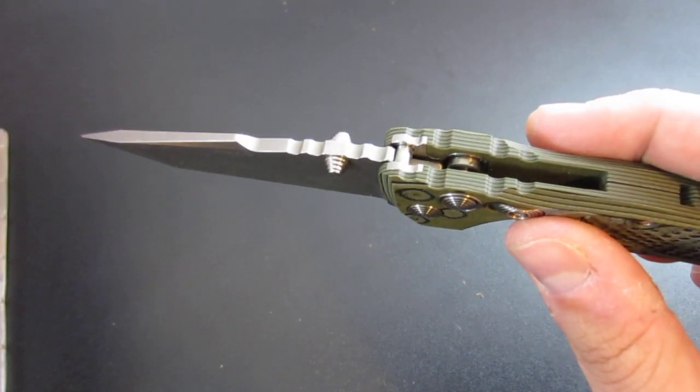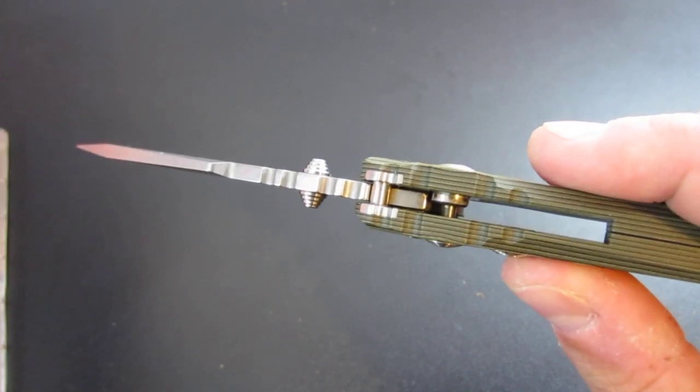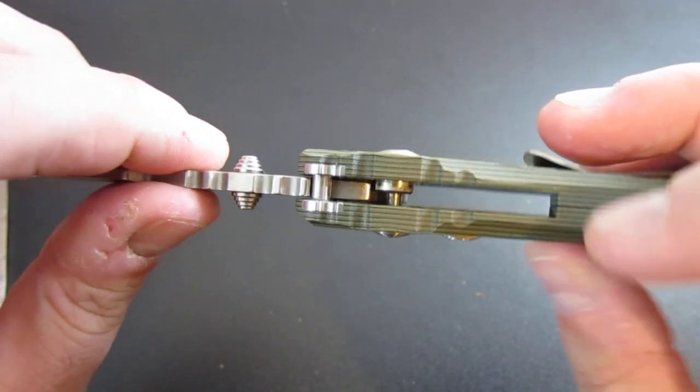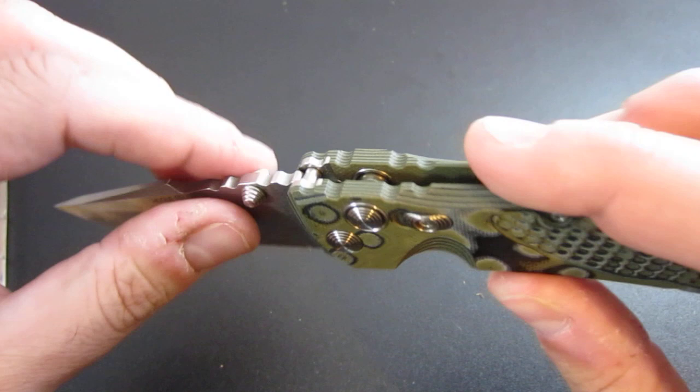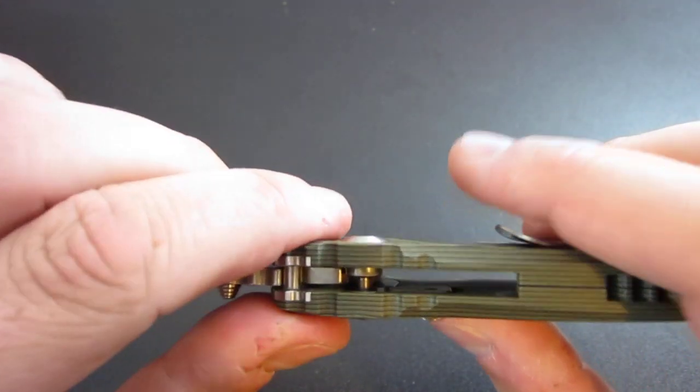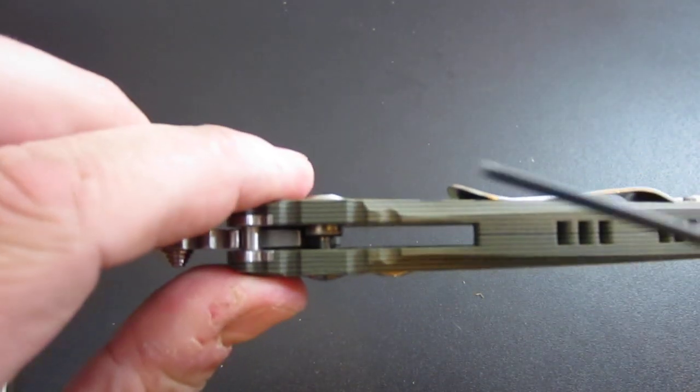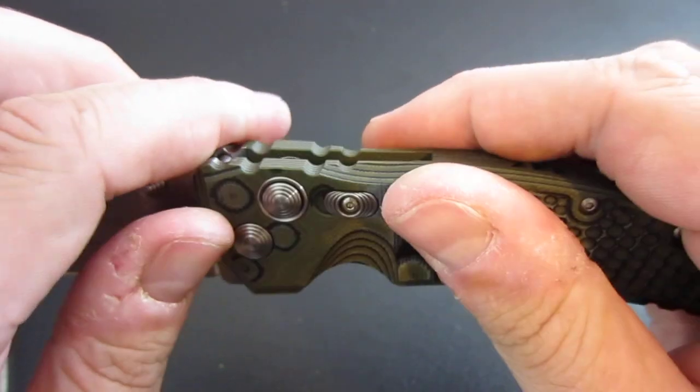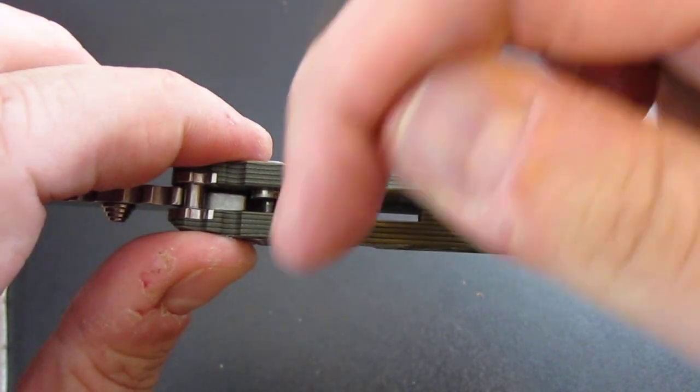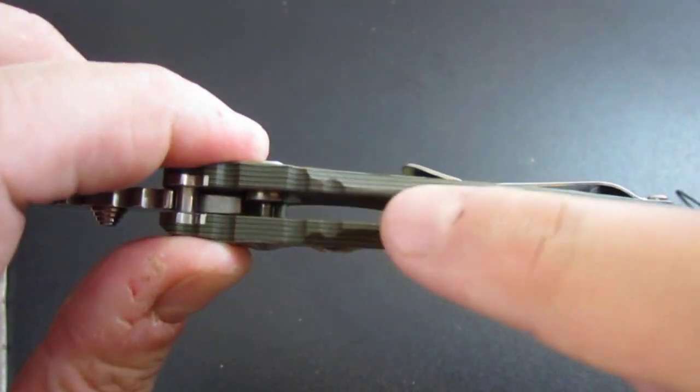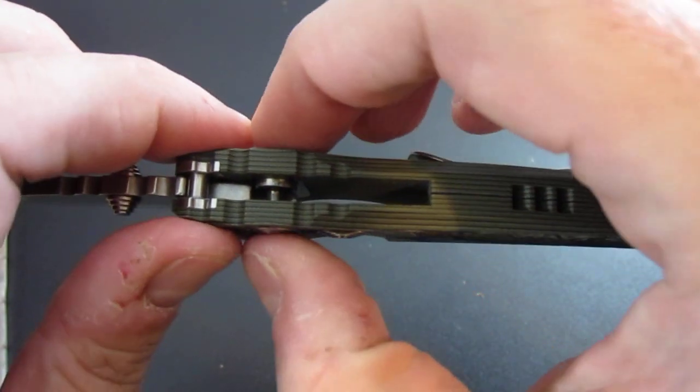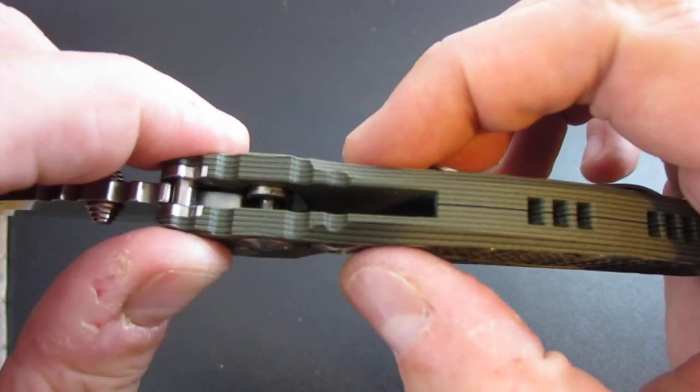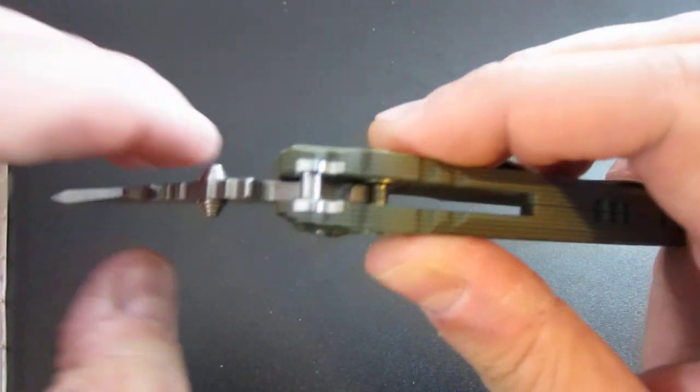An axis lock actually works very similar to this. The only difference is that on the axis lock, this drum would go all the way across here, and instead of having a spring that pushes this way, the spring would push this way, and you would move the drum out of the way by doing this. But other than that, it's very similar.